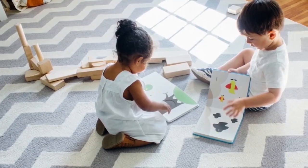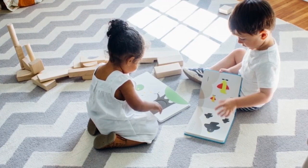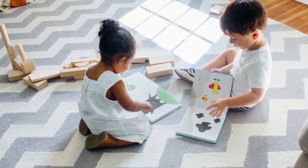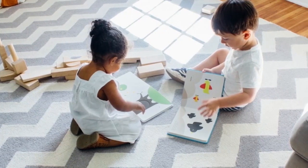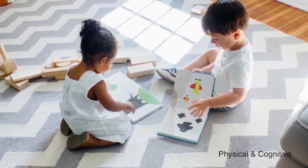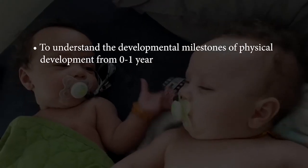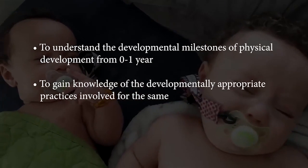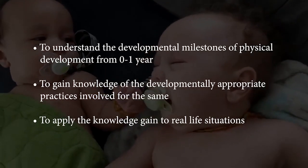Developmentally appropriate practices are practices or activities practiced with the child to help attain optimal learning and development. The major developmental areas are physical, cognitive, language, and socio-emotional. In this module, we will understand the physical and cognitive developmental milestones and developmentally appropriate practices. Learning objectives: to understand the developmental milestones of physical development from 0 to 1 year, to gain knowledge of developmentally appropriate practices, and to apply the knowledge to real-life situations.